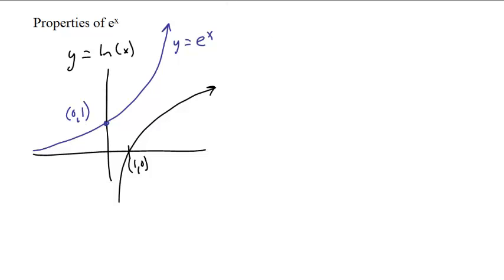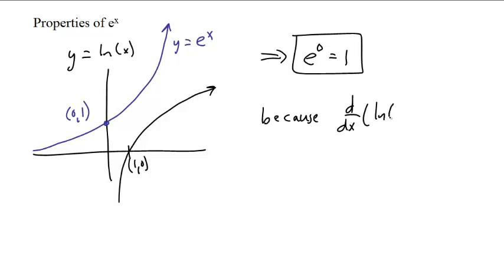So that tells us that e to the zero is one. Well, we knew that. What else can we figure out? Because the derivative of the natural log of x is one over x, we can figure the derivative of e to the x.